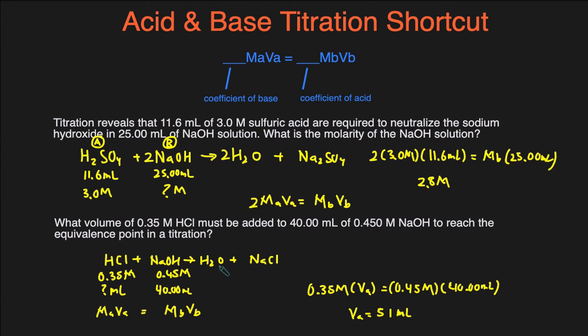So there you go. That's the shortcut for acid-base titration calculations. It's pretty much your MaVa, MbVb, but just make sure you cross the coefficients. So the coefficient of the base goes to the acid side, the MaVa, and then the coefficient of the acid cross over to the MbVb.